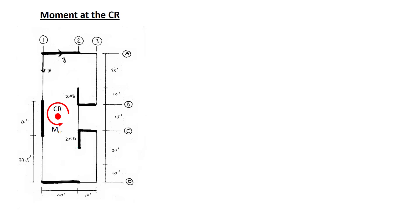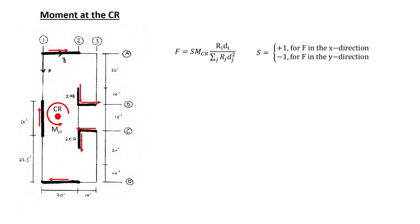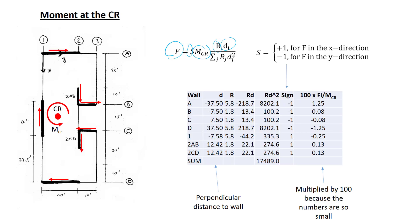Here is the diaphragm we are considering. We have a moment at the center of rigidity, and this moment must be resisted by the forces shown. The moment acts counterclockwise, and all the forces shown act clockwise about the center of rigidity. So each SFRS component in both directions will resist the applied moment at the center of rigidity. This is the expression we derived: the force in each SFRS component as a function of the moment at the center of rigidity, the wall's rigidity, and the perpendicular distance from the center of rigidity to each wall.